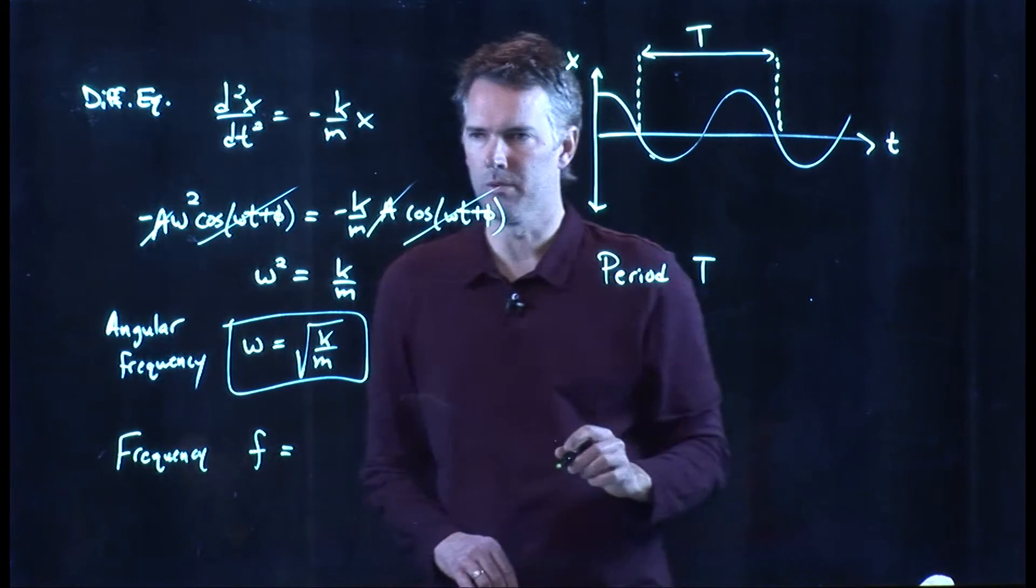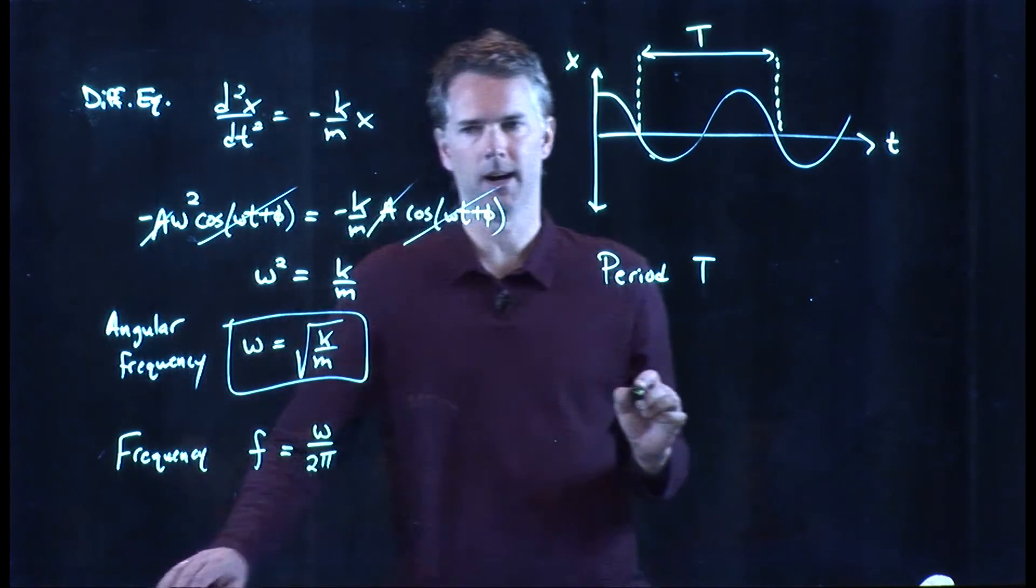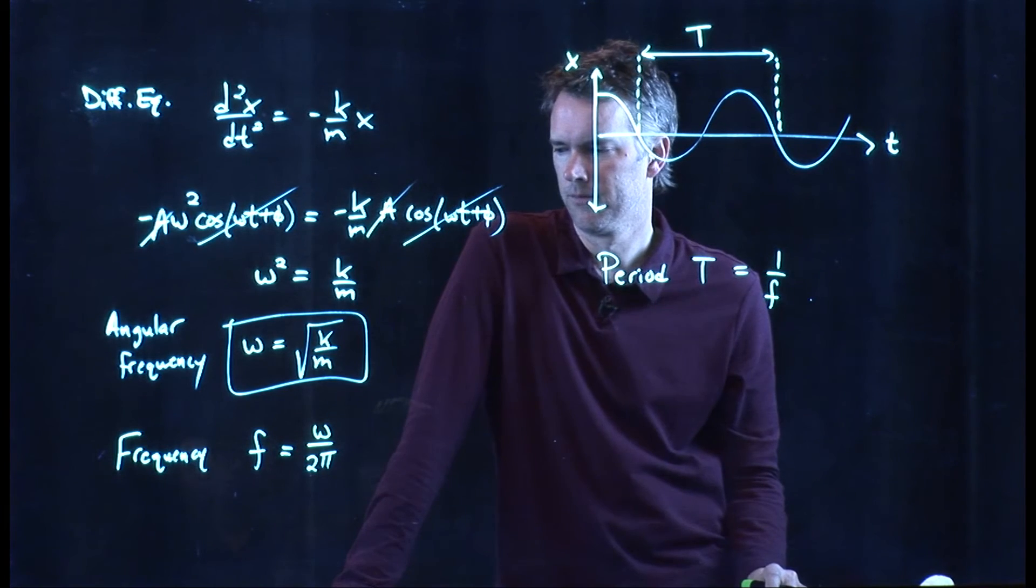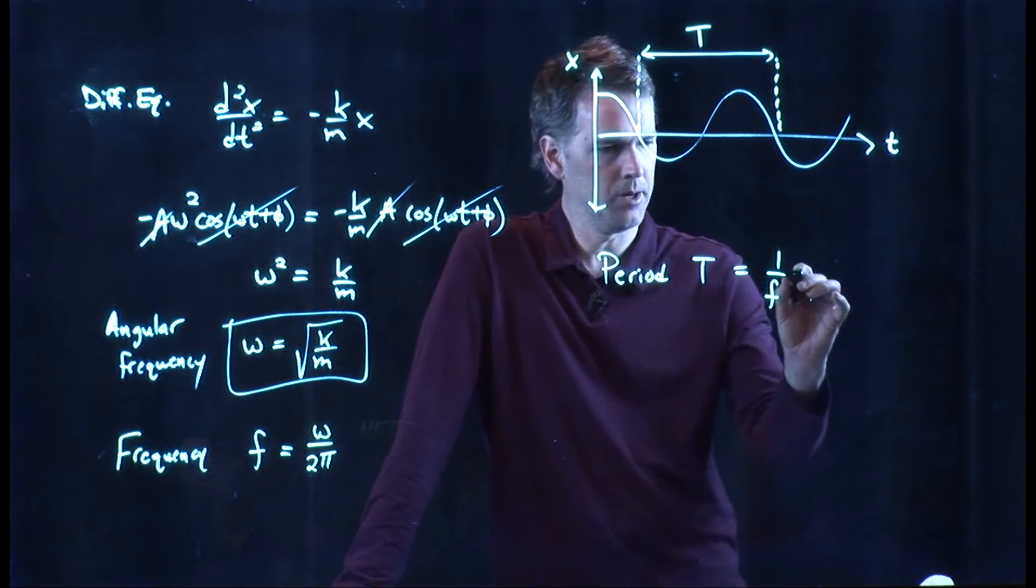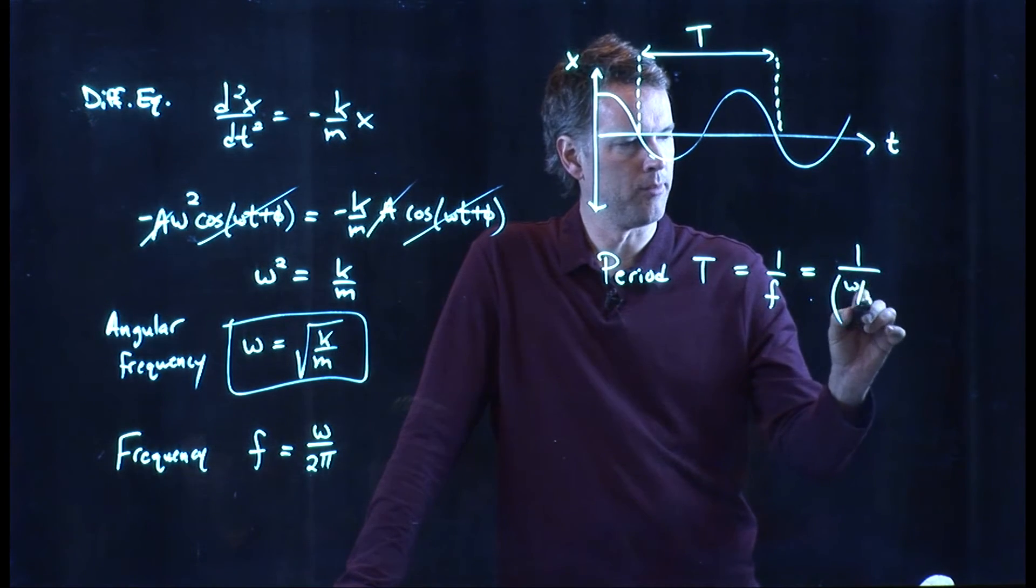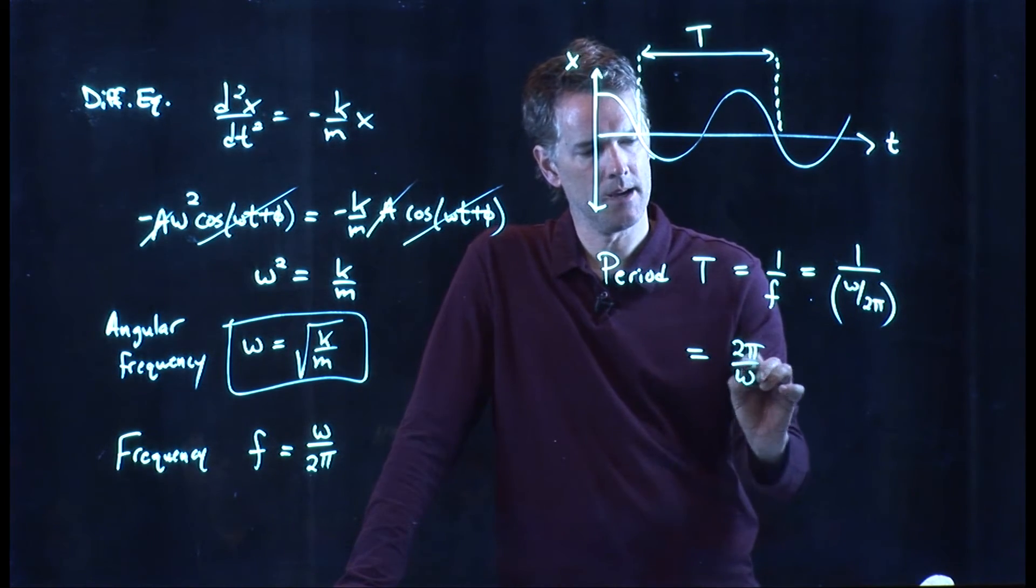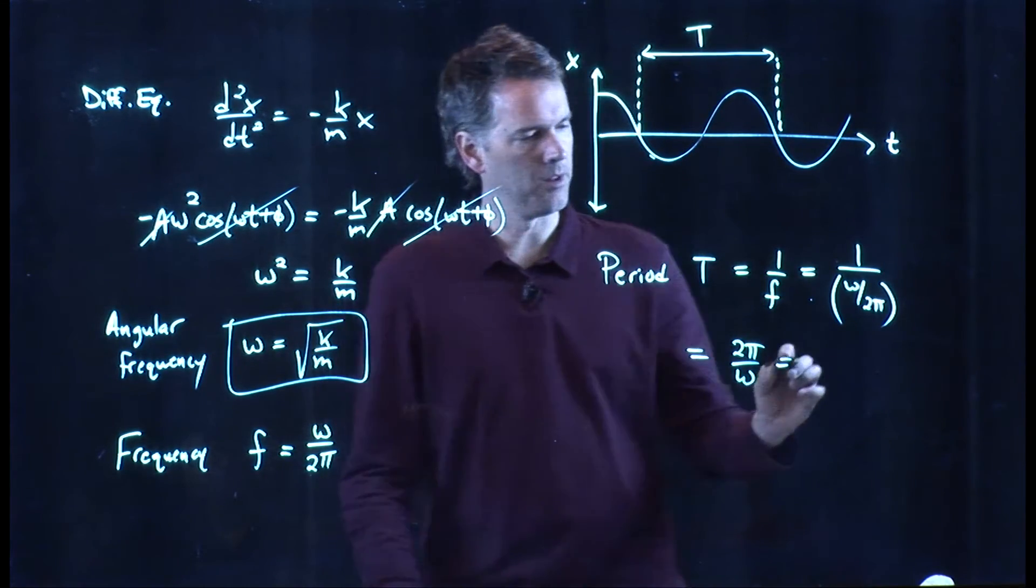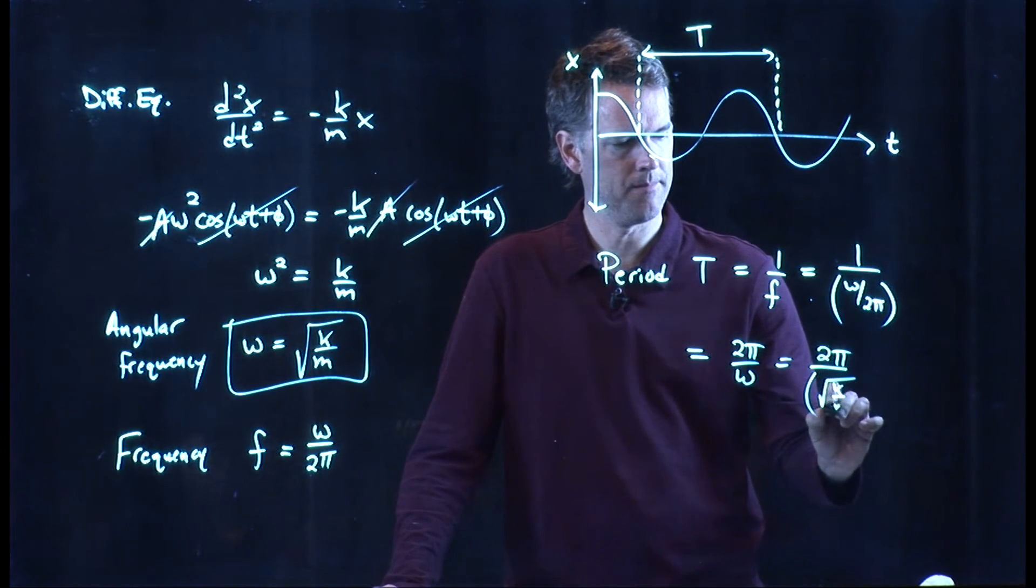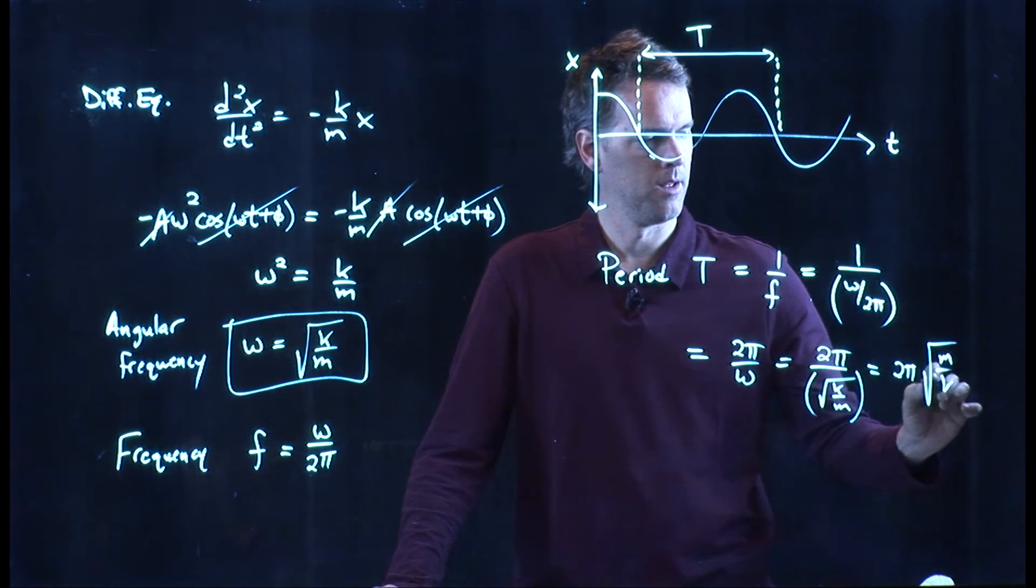And the period is of course related to things like the frequency. What is the frequency? Well, the frequency is omega over two pi, and the period T is one over the frequency. And so in our case with the block on the spring, we can plug all this in. We've got one over omega over two pi, and that becomes two pi over omega. But we know exactly what omega is, so this is two pi divided by the square root k over m, or two pi square root m over k.